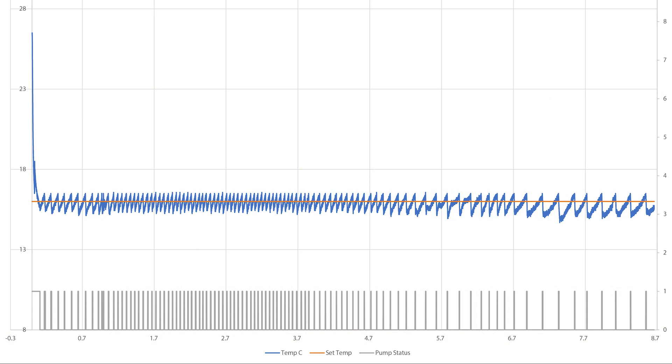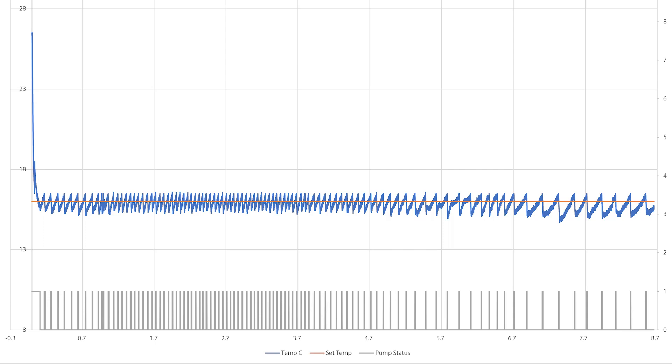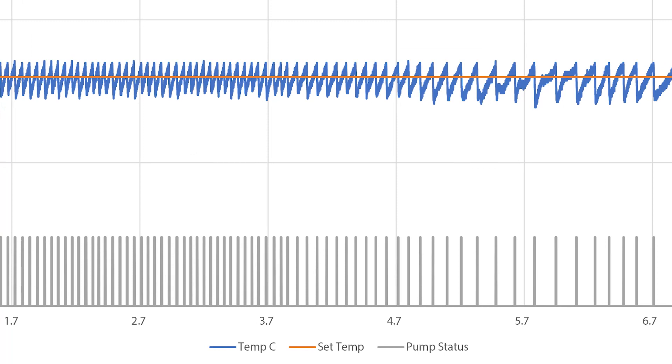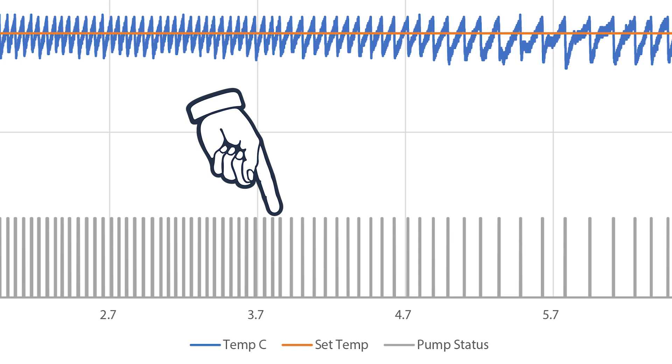Now if we pop over to the Excel graph, we'll see three different lines. We have the set point going horizontal. It's kind of like an orangey red color. We've got the blue line, which kind of zigzags up and down. That is the temperature. And then we have the line at the bottom. And that is an indication of whether the pump is turned on or turned off. So you can see it looks like little tiny spikes.